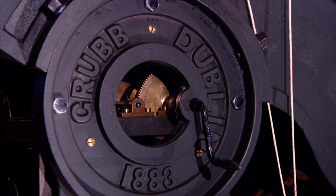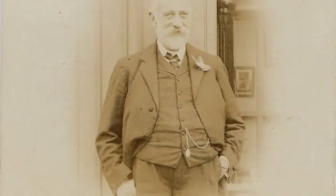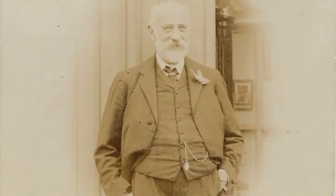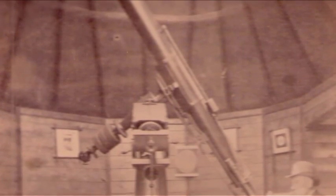The telescope was manufactured by Thomas Grubb in Dublin in 1883 and purchased by William John MacDonald in 1885. He added it to his observatory at Port Macquarie in New South Wales.